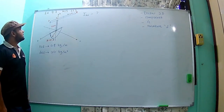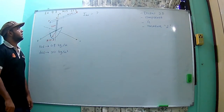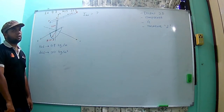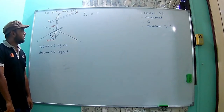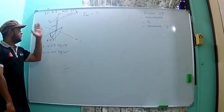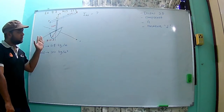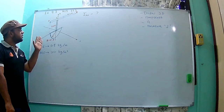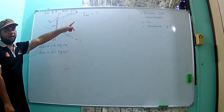Let's see this exercise. Exercise 9.7, page 223. You are given this composite component, and you are required to determine what is the value of Ixx.